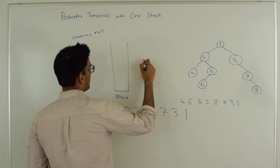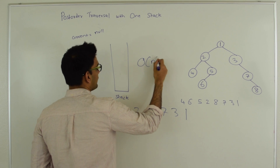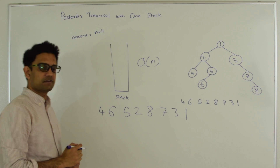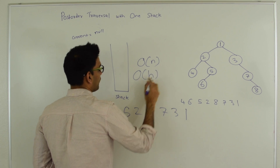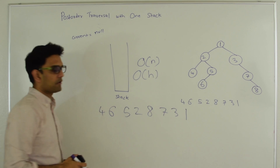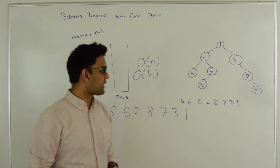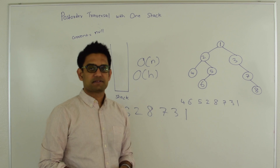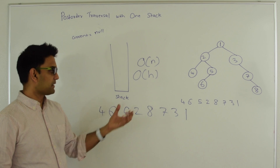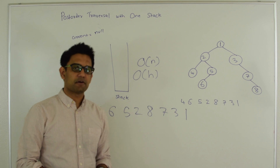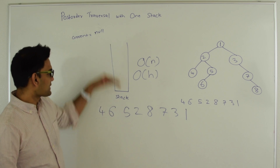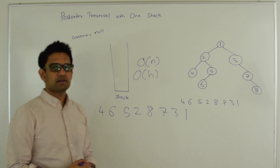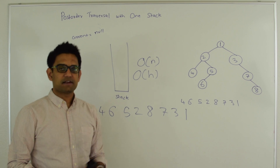The time complexity for this algorithm is O(N) where N is the total number of nodes, and the space complexity is O(H) where H is the height or depth of this tree. This algorithm can also be used to find the maximum height of a tree, and that height will be the maximum size of the stack. Next let's look at the code for this algorithm.